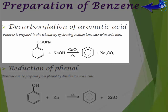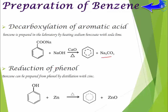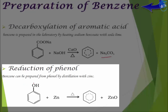The first method is decarboxylation of aromatic acid. Benzene can be prepared by heating sodium benzoate with soda lime. Sodium benzoate has this structure, and when heated in the presence of soda lime — that is NaOH — this carbon is removed along with the two oxygen atoms in the form of sodium carbonate.